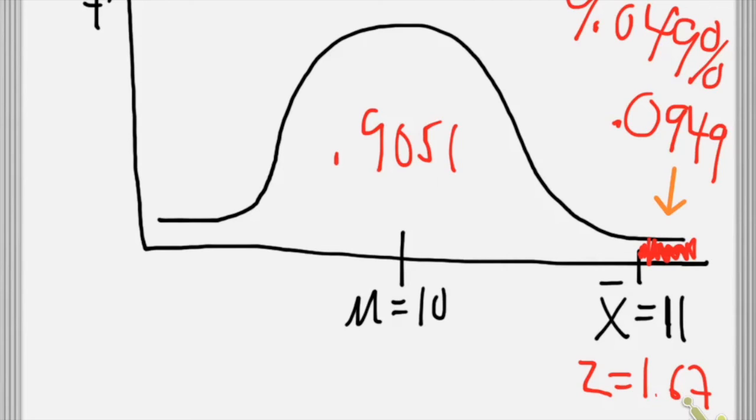About 9.049% of those samples would be expected to have means of 11 or higher. So that's how we can calculate a z-score using the standard error of the mean and find the probability of getting randomly selected sample means that are a certain distance away from the population mean.